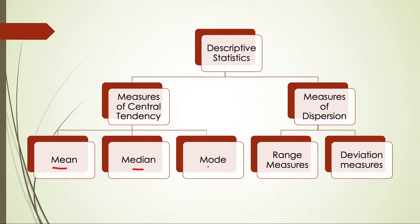In central tendency we study mainly mean, median, and mode. In measures of dispersion we have different measures — I have not listed all of those. Some come under the category of range measures, where we look at the range of the data.